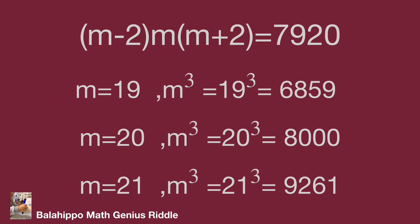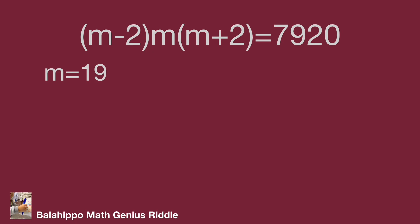The multiply numbers 6859, 8000, or 9261 are close to the value of 7920. When m equal to 19, substitute m by 19 into these equations: m minus 2 equal to 17 and m plus 2 equal to 21.